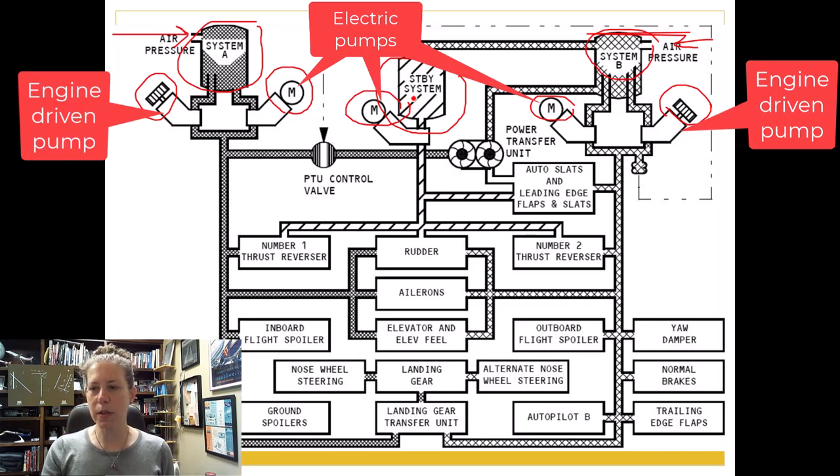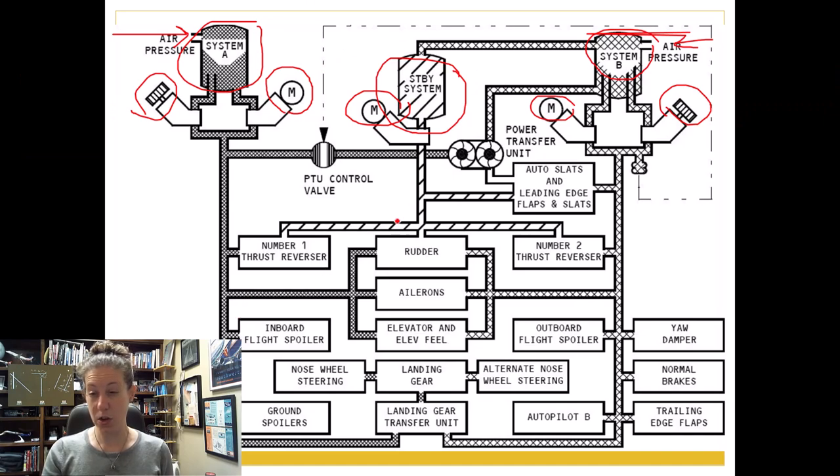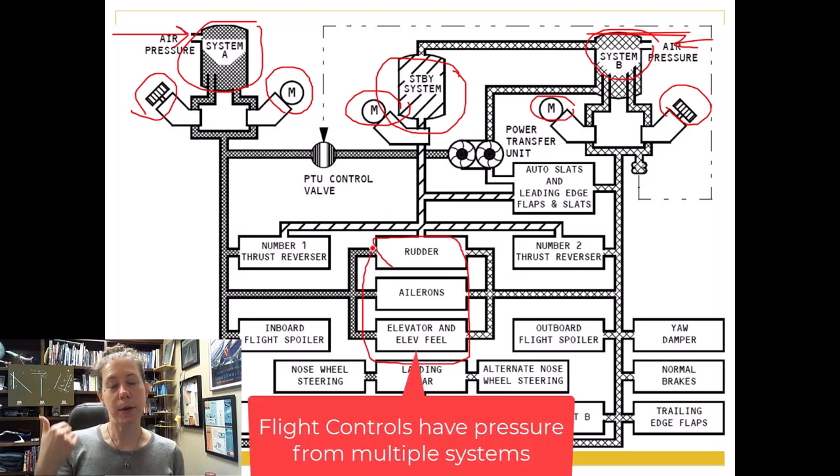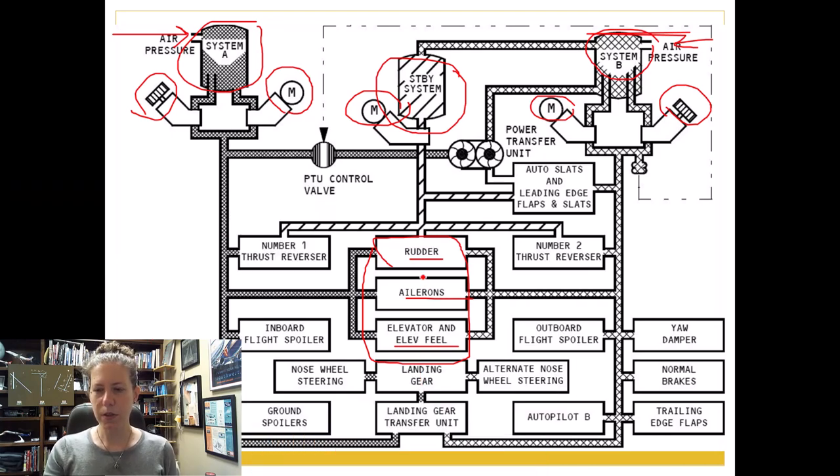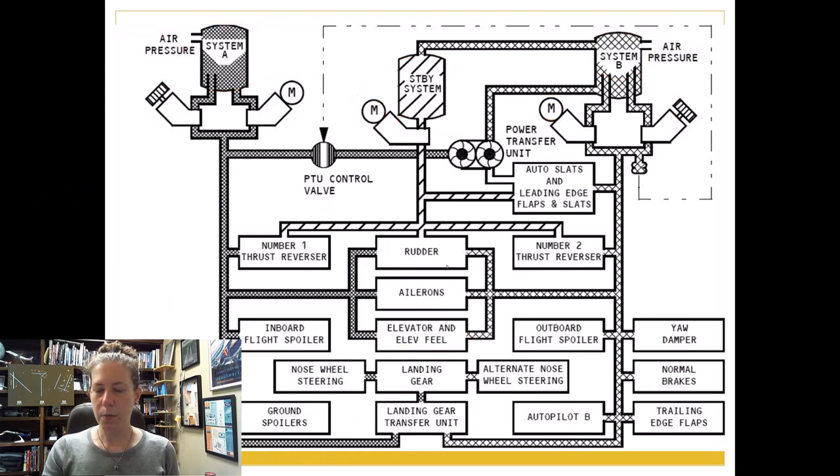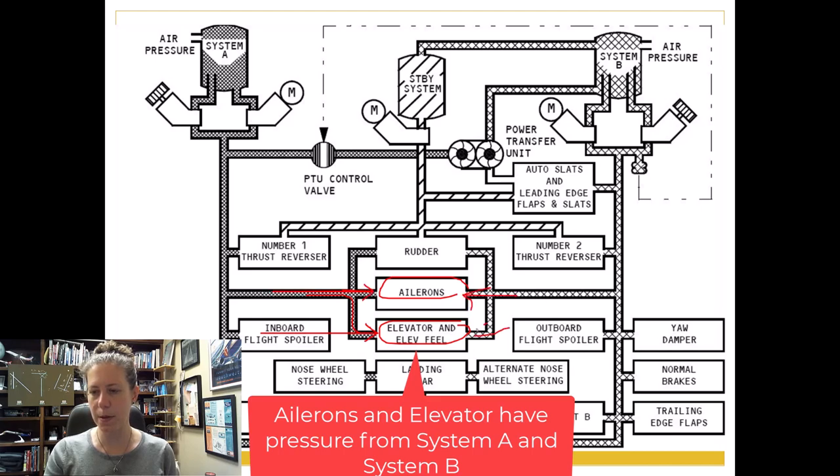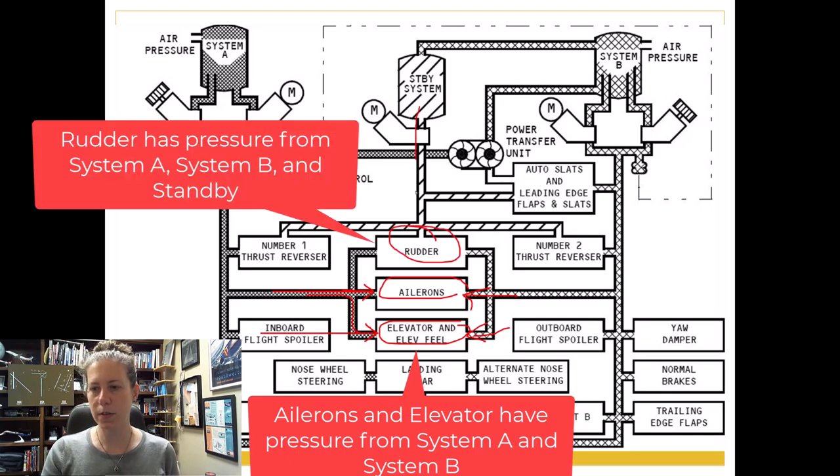Now, the other thing, the reason I'm pulling all this up is you can see that these systems are interactive with each other. But right in the middle is my flight control. So remember I was saying we need hydraulics, especially in large airplanes to make it easier for the crew to operate the airplane, kind of like power steering. So we've got my rudder, my ailerons, and then my elevator and elevator feel system. Notice when we look at this, that in both of my ailerons right here and my elevator feel system, I have pressure coming in from System A and pressure from System B. The rudder is the only part of the hydraulics that has also standby system as well as A and B available for it.